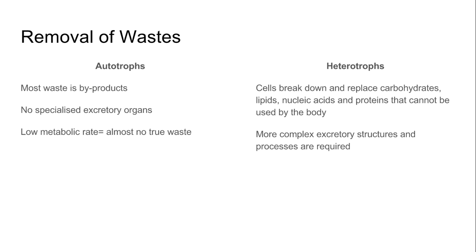There are two different processes for autotrophs and heterotrophs. In autotrophs, most waste produced is byproducts; they don't have any specialized excretory organs, and because of their low metabolic rate, there's almost no true waste. In heterotrophs, cells are constantly breaking down and being replaced — including carbohydrates, lipids, and nucleic acids that cannot be used by the body — so heterotrophs have more complex excretory structures and processes to remove waste and maintain balance.